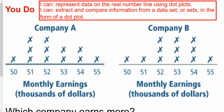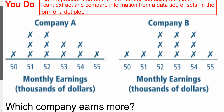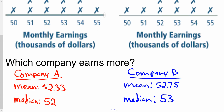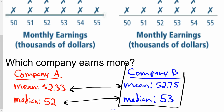Comparing these two datasets: for Company A I got a mean of 52.3 and a median of 52. For Company B the mean was 52.75 and the median was 53. Comparing the means, Company B is just slightly larger, and for the median, Company B is also slightly larger by one — which represents $1,000. So we can definitely tell that Company B is doing better, but not by much.